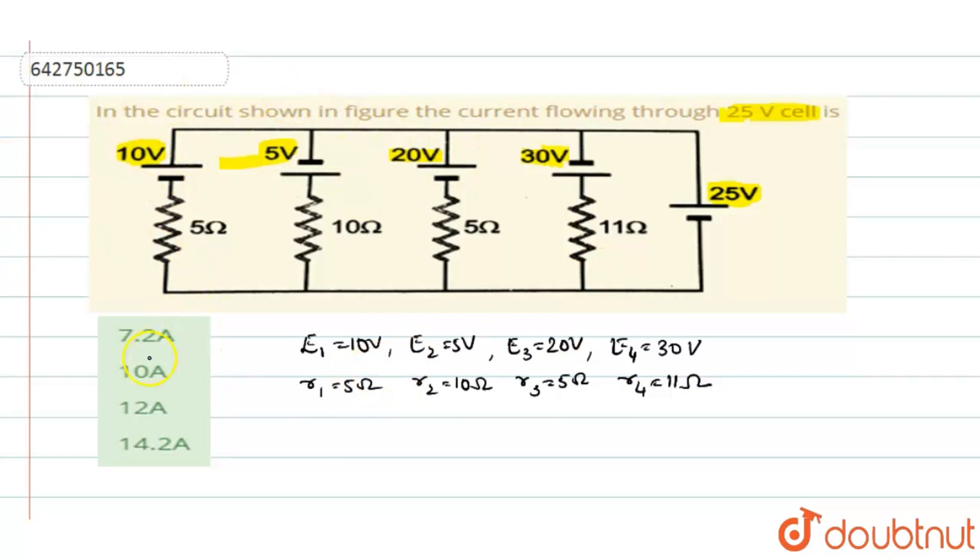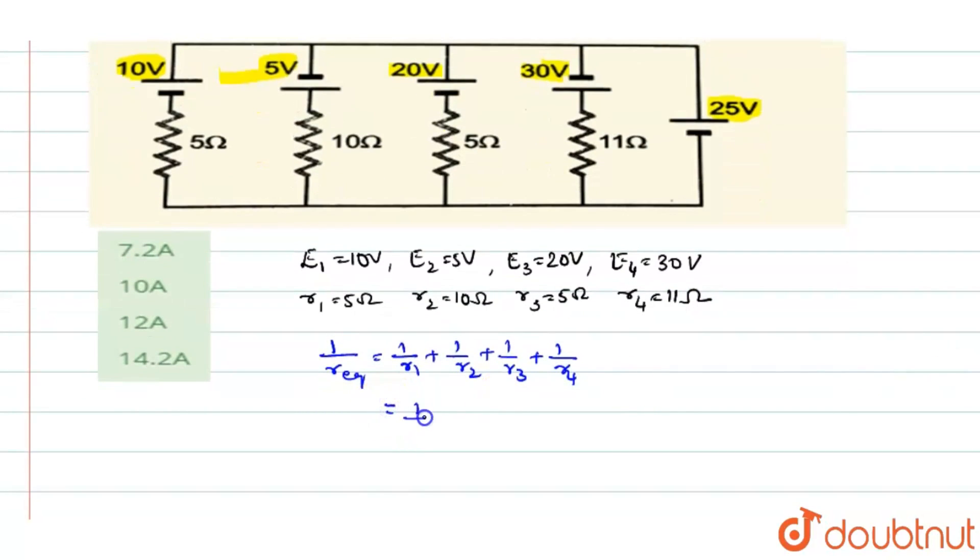their equivalent resistance will be 1 by R equivalent is 1 by R1 plus 1 by R2 plus 1 by R3 plus 1 by R4. So when you simplify this, substituting all the R values here, 1 by 5 plus 1 by 10 plus 1 by 5 plus 1 by 11. So on simplification, you will get R equivalent as 1.69 ohms. This is R equivalent for all the 4 cells.